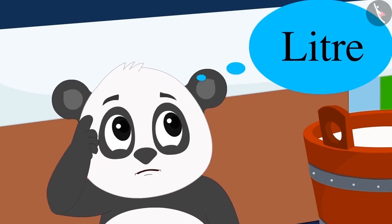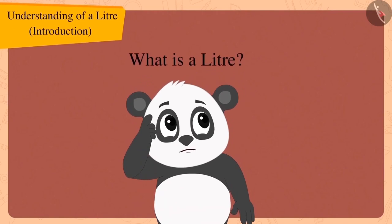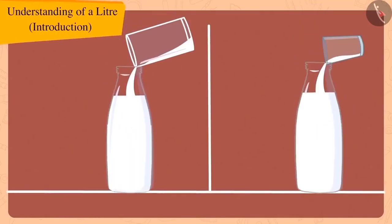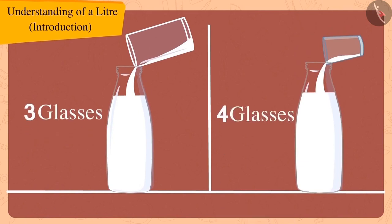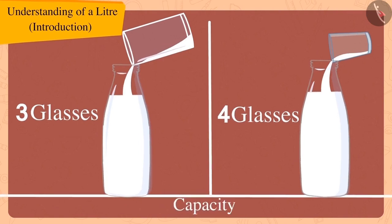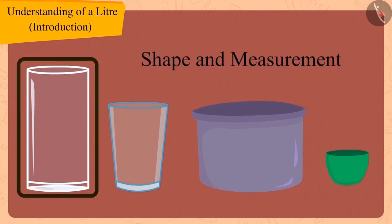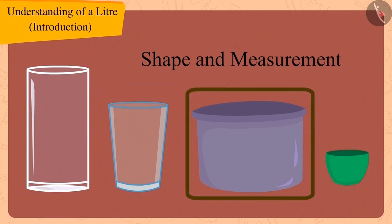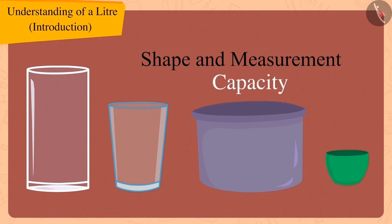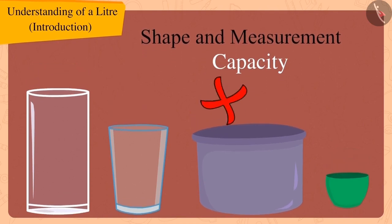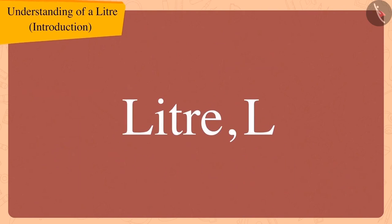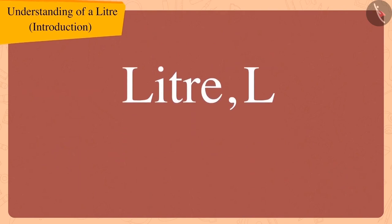Golu did not know anything about litre. Children, do you know what is a litre? Just as we saw earlier, Golu used a glass to measure the capacity of other utensils. A glass or any utensil may be of one kind, but due to different shapes and measurements, we cannot use them to measure the capacity of other utensils. To solve this problem, we use a unit called litre. We write this as L.